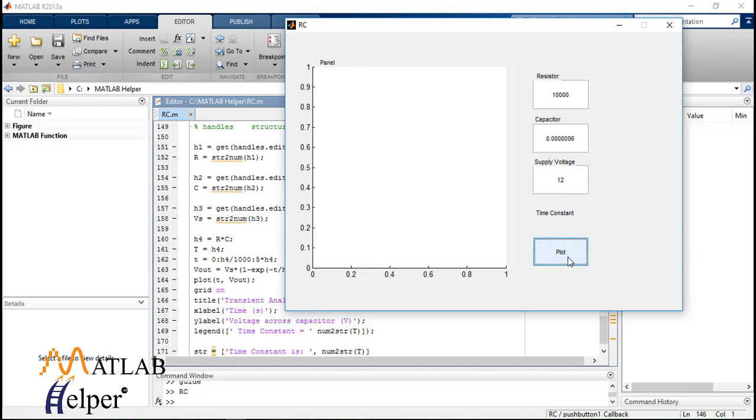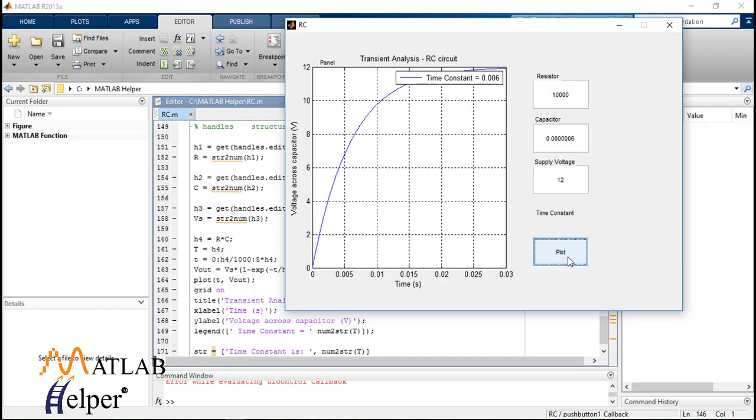When you click on the plot button you will get a graph for transient analysis of RC circuit with time constant as 6m.